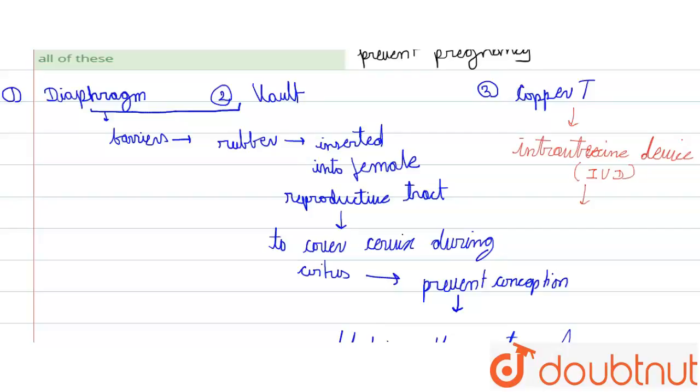It is copper-based and T-shaped, and this device is inserted into the uterus. In the uterus, it releases copper ions in the female genital tract to prevent pregnancy.